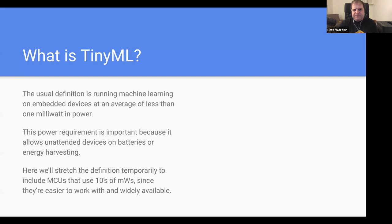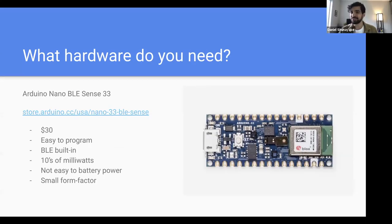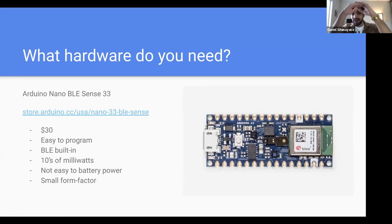Dan asks: can you discuss the differences between TinyML and GPU-powered edge devices like the Google Coral and Jetson Nano? It sounds like TinyML devices are an order of magnitude smaller than those platforms. Pete confirms: the Jetson boards use up to 10 watts of power, which would drain even a phone battery in under an hour or two — something you have to keep plugged in or constantly change batteries on.